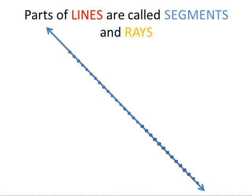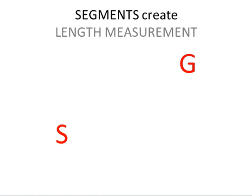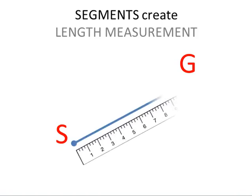Parts of lines are called segments and rays. Segments create length measurement.